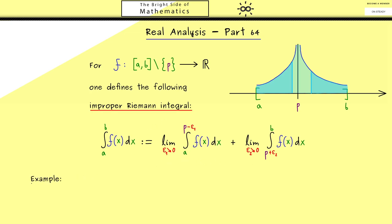Then I would say let's look at an example. So let's calculate the integral from minus 1 to 1 of the function 1 divided by 2 times the square root of the absolute value of x.